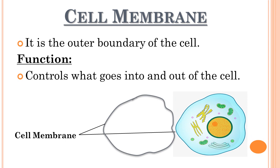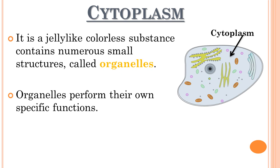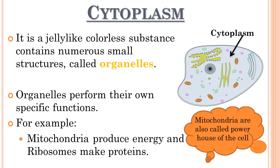The cytoplasm is a jelly-like colorless substance which holds a number of small structures called organelles. Organelles are very tiny structures that perform their own functions. For example, mitochondria are organelles known as the powerhouse of the cell because they produce energy, and ribosomes make proteins. Chemical reactions also take place in the cytoplasm — a chemical reaction is a process in which two things combine or react together to produce a new thing.